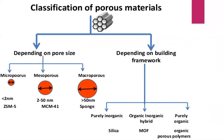Classification of porous materials depends either on pore size or on the building framework. Depending on pore size, they are divided into microporous, mesoporous, and macroporous. Depending on the building framework, they are divided into purely inorganic, organic-inorganic hybrid, and purely organic.